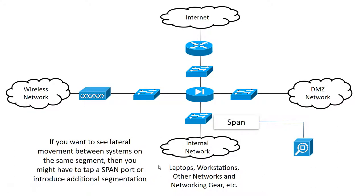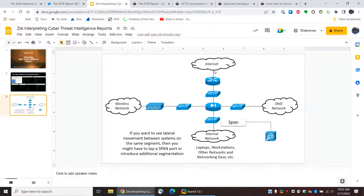But if you have multiple systems down here and you're simply watching north-south, you're not going to see the activity. So, potentially Zeek could be very useful to you, but if a sensor isn't in the right location, then what are you going to do?